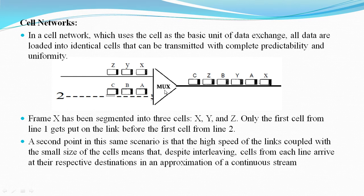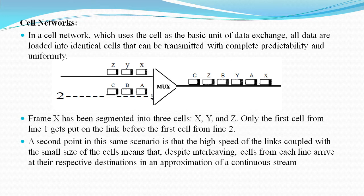As shown in the figure, with two lines sending cells instead of frames, frame X has been segmented into three cells X, Y, and Z. Only the first cell from line 1 gets put onto the link before the first cell of line 2. The cells from the two lines are interleaved so that none suffers a long delay. The high speed of the link coupled with the small size of cells means that, despite interleaving, cells from each line arrive at their respective destination in approximation of a continuous stream.